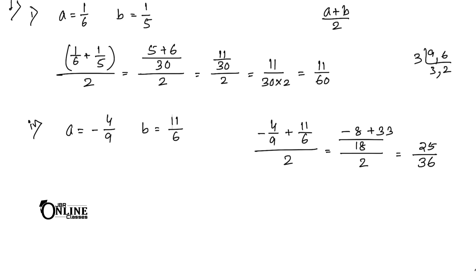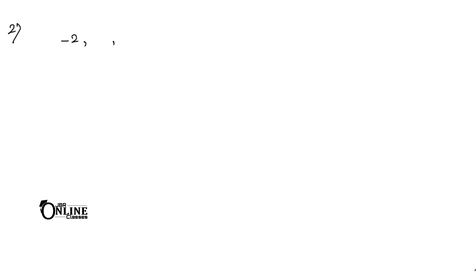Now sum number 2 — find two rational numbers between -2 and 2. This one is very easy. In between -2 and 2, two rational numbers are 0 and 1. So 0 and 1 is your answer.